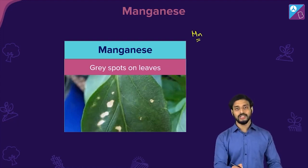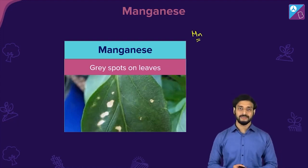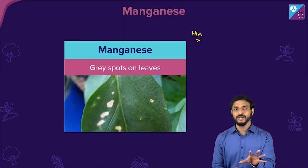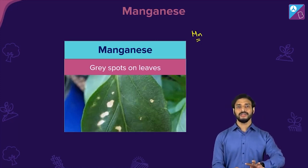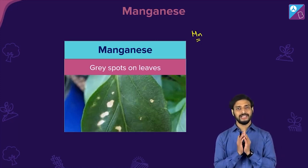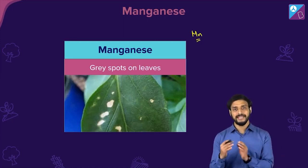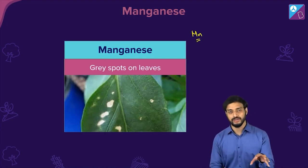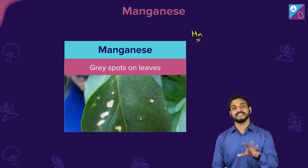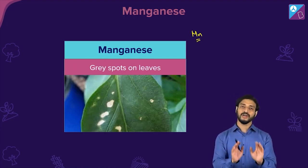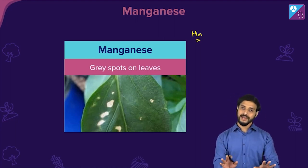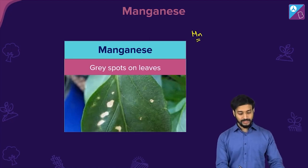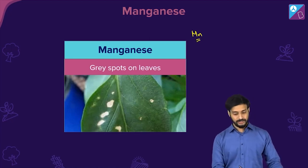Manganese deficiency causes gray spots on the leaves. There are many symptoms, but questions are commonly asked about gray spots, so focus on that key point.